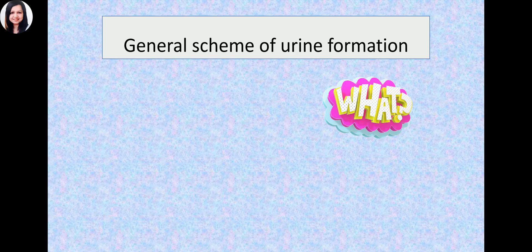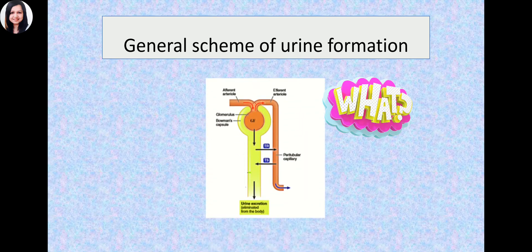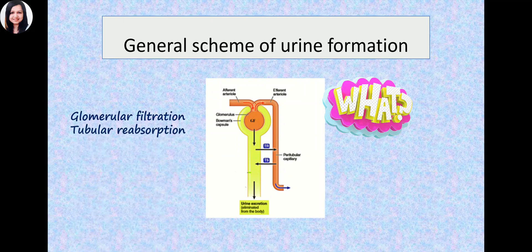So how are these steps of cleaning a cupboard related to the formation of urine? Step number one — removing everything and throwing it on the floor — can be compared to glomerular filtration in the kidneys. Glomerular filtration is bulk, non-discriminate filtration of the plasma into the Bowman's capsule. Step number two can be compared with tubular reabsorption, because we are placing some substances we think are beneficial back into the cupboard.